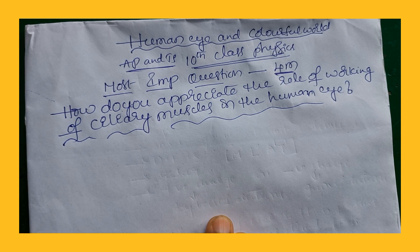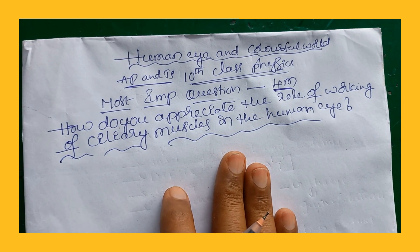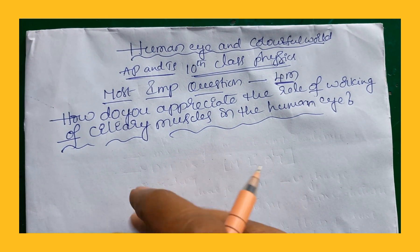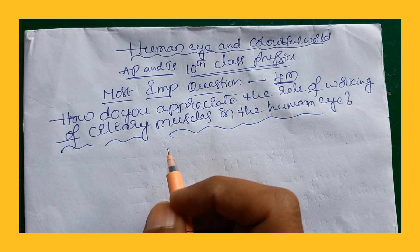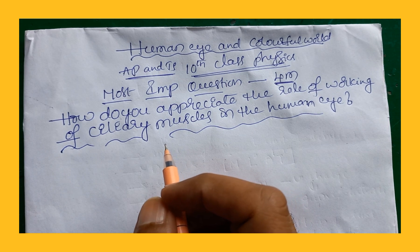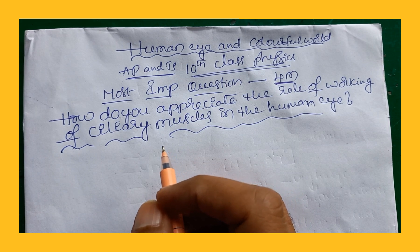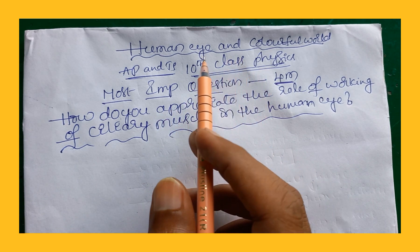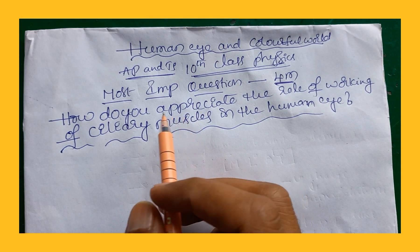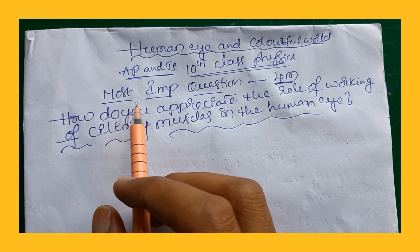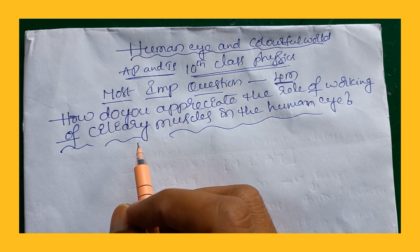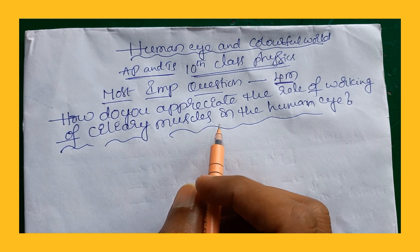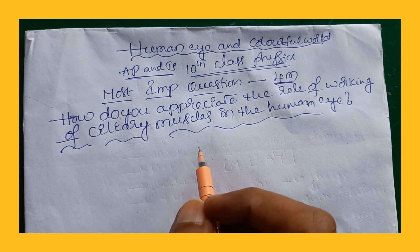Hi dear students. Today in our class we are going to discuss an important question for four marks for public examination in 10th class physics. The chapter is Human Eye and Colorful World for both AP and Telangana states. The question is: how do you appreciate the role of working of ciliary muscles in the human eye?